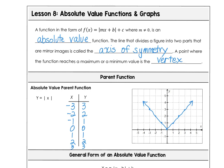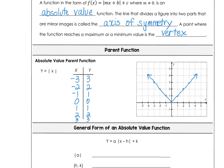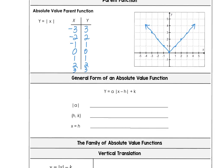Our parent function looks like that. The axis of symmetry is x equals zero and the vertex is at the origin.